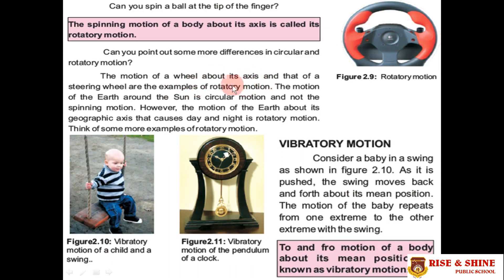The motion of the Earth around the sun is circular motion, because it rotates around an external point. However, the motion of the Earth around its own geographical axis — which causes day and night — is rotatory motion.